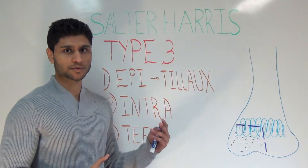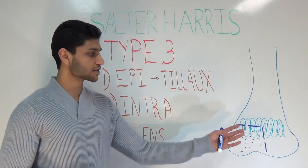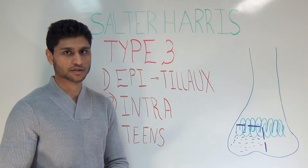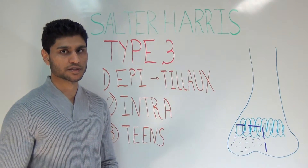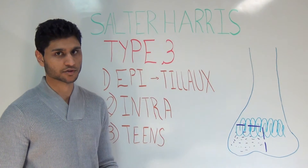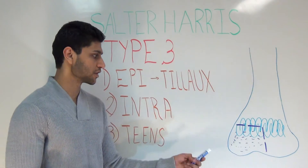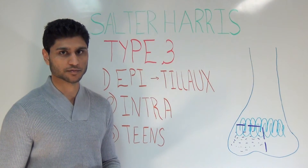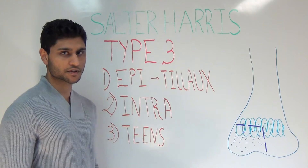In type 3, a portion of the epiphysis along with a portion of the growth plate is separated from the metaphysis and the remainder of the epiphysis. These are quite rare, and when they do happen, they occur in the distal aspect of the tibia — specifically a Tillaux fracture, which is a fracture of the anterior tubercle. These are intra-articular, unlike types 1 and 2, and patients are prone to chronic disability such as osteoarthritis of the affected joint. These tend to occur in teenagers.